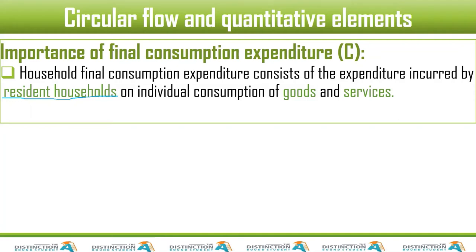For example, I'm from Zimbabwe and I've been here since 2009. When I go to Zimbabwe, I'm actually visiting. So I'm a resident in South Africa. Household final consumption expenditure consists of the expenditure incurred by all of us who stay in South Africa — it doesn't matter what your nationality is.